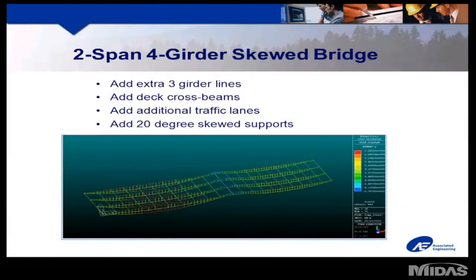Once the initial planning and preliminary design is complete for one girder, the analysis is extended to the full bridge by adding the three extra girder lines in our example, adding deck cross-sections to create the distribution between the longitudinal girders, and any additional traffic lanes and skews would be added. In our example we had a 20-degree skew. We can now proceed with the final design of the bridge, optimize sections, and account for additional effects such as skew.